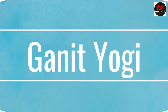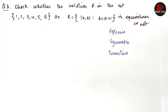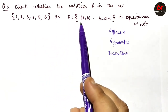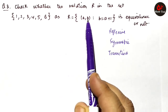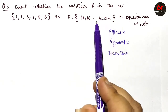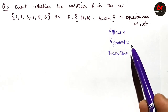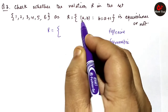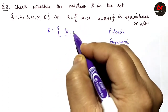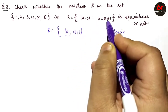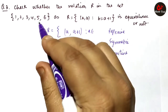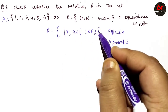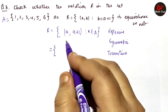Exercise 1.1, question number 3 — we check whether the relation on the set {1,2,3,4,5,6} is reflexive, symmetric, or transitive. The relation is defined as a collection of ordered pairs such that the second element can be expressed as the first element plus 1. That is why the set-builder form is important. So R can be written as {(a, a+1) | a ∈ A}, where A is our given set.